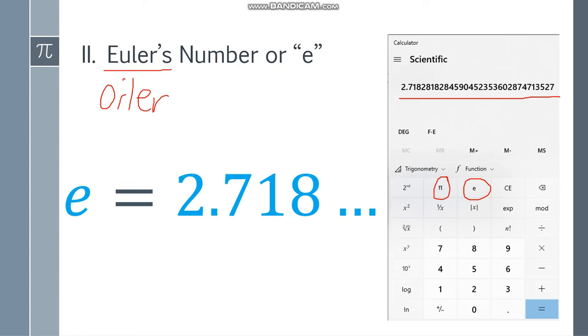So again, it's an irrational number. It goes on forever without repeating the pattern. So we can use 2.718. But if we're going to do a computation, you must press the calculator's E button. Not just 2.718.